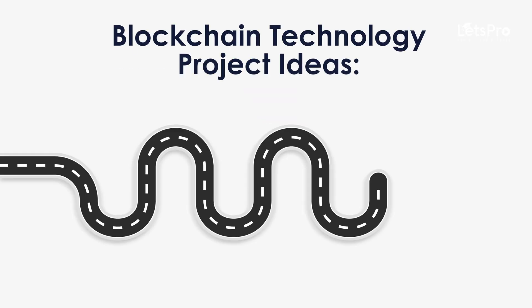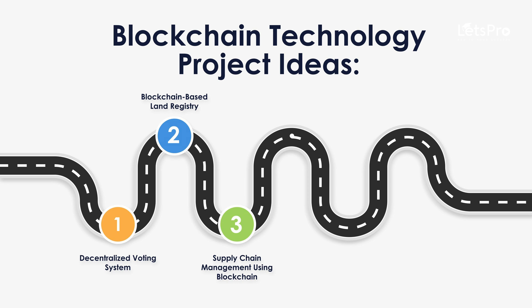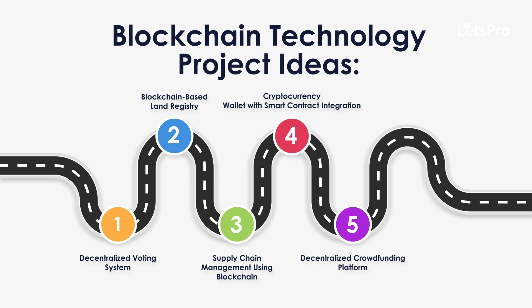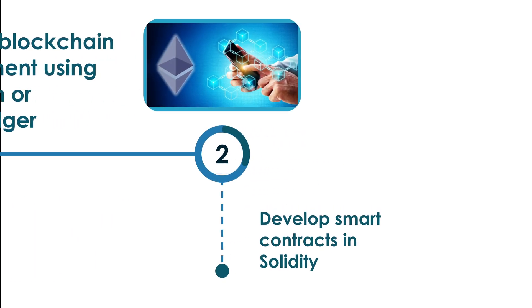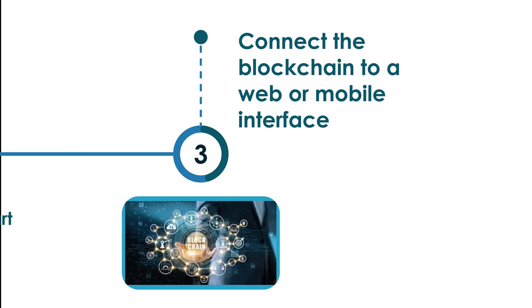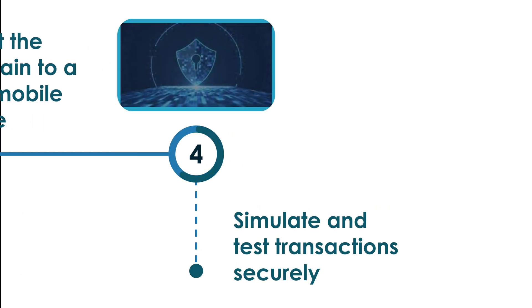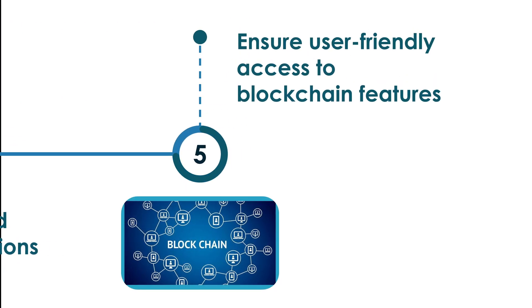Project ideas: Decentralized voting system, blockchain-based land registry, supply chain management using blockchain, cryptocurrency wallet with smart contract integration, and decentralized crowdfunding platform. For prototype development: set up a blockchain environment using Ethereum or Hyperledger, develop smart contracts in Solidity, connect the blockchain to a web or mobile interface, simulate and test transactions securely, and ensure user-friendly access to blockchain features.